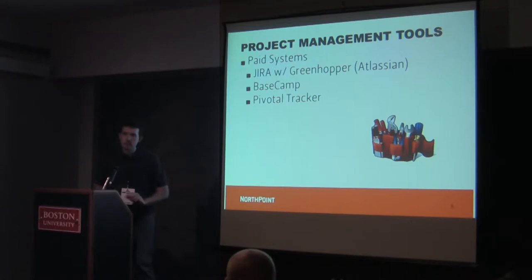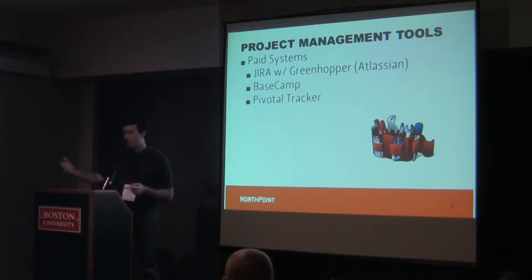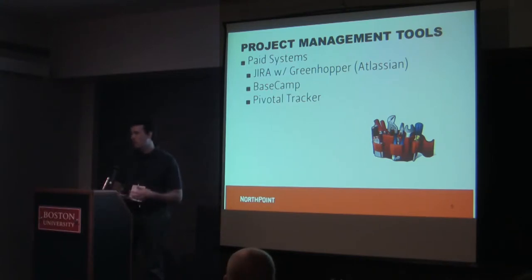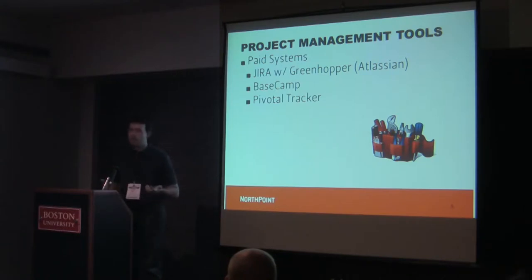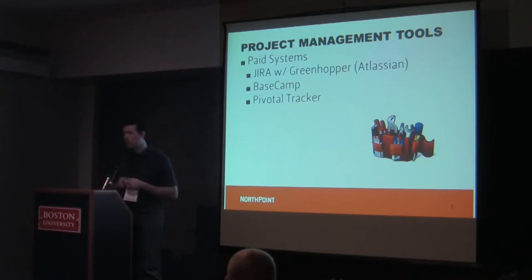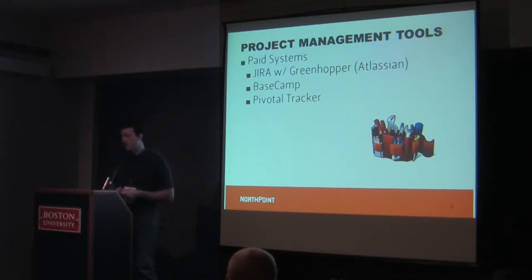Basecamp is another one. Jira was good for creating tasks and stories — it was originally an issue or bug tracking system — but communication was a little difficult. Basecamp allows us to basically get rid of email and provides a web-based tool for communication, document storage. You can upload a document, have a communication thread about it, and do searches. It's a really good tool, though it is paid. Pivotal Tracker is a similar tool at a lower cost, more geared towards Agile and Scrum. These are the ones we've used and know work well.